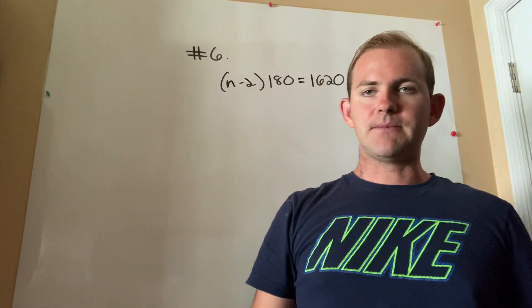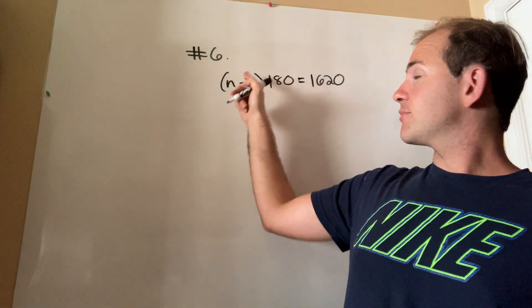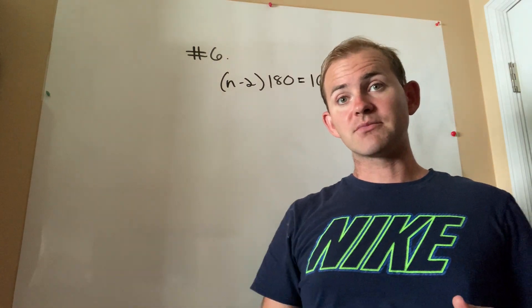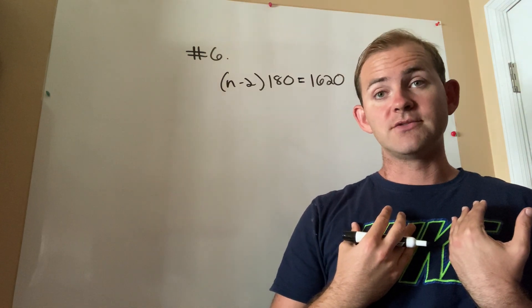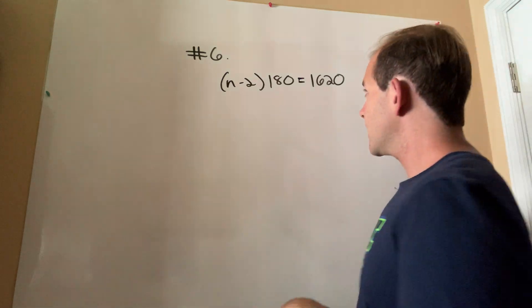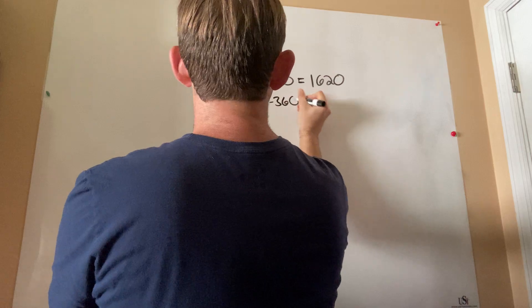From here, it's an algebra 1 problem. Which method would you prefer to solve it? Would you prefer to use the distributive property on the left-hand side or would you prefer to use the division property by dividing both sides through by 180? Personally, I don't care which one you do. It's actually a matter of personal preference. So just because I think many of you guys like the distributive property, let's do that.